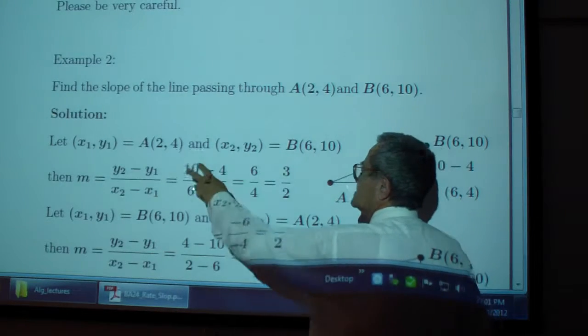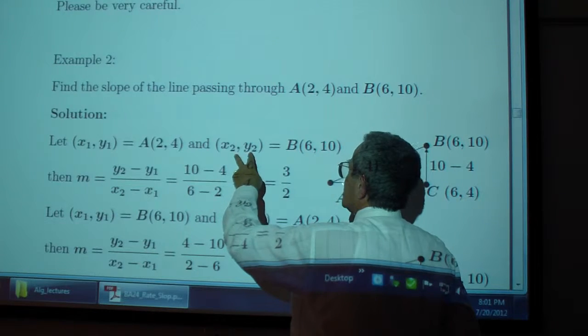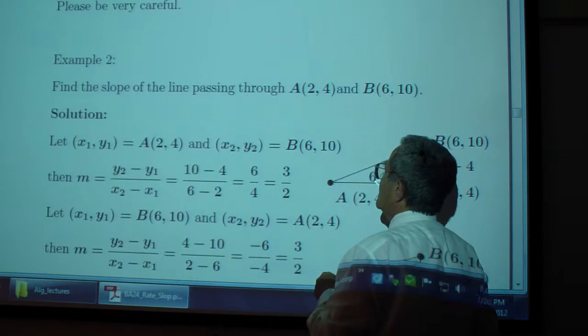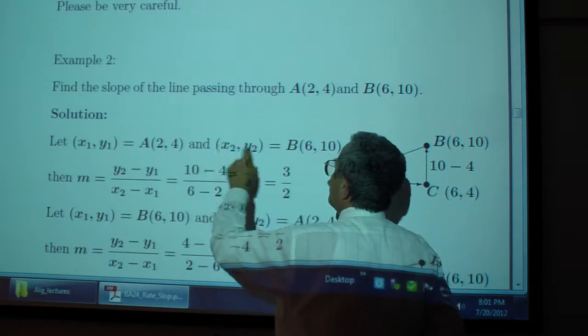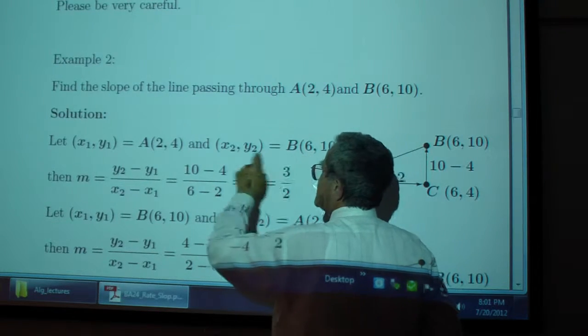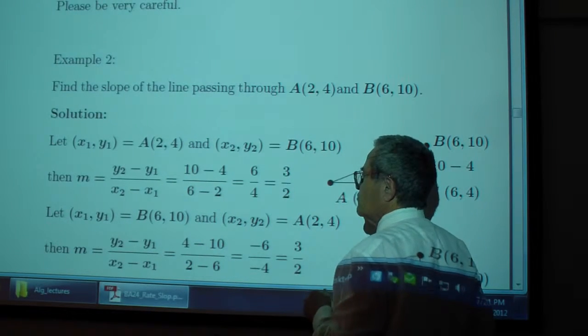Let x sub 1, y sub 1 be 2, 4. Let x sub 2, y sub 2 be 6, 10. Then you get 10 minus 4 over 6 minus 2, which gives you 3 over 2.